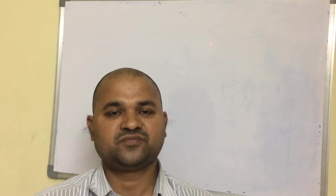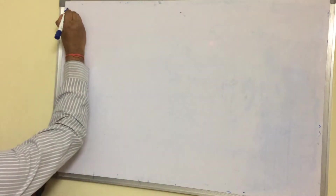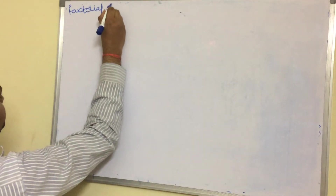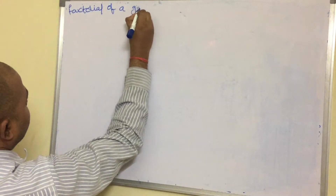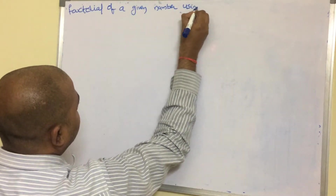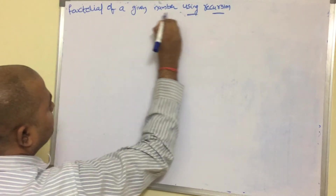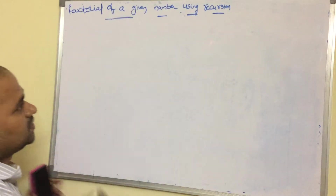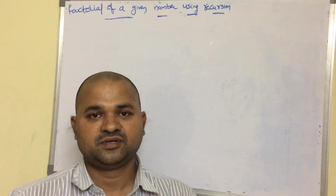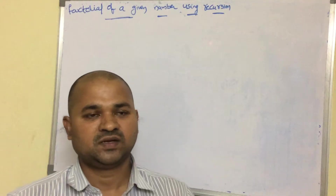In this class, let's see about factorial of a given number using recursion — a C program to find factorial of a given number using recursion. Recursion means a function which is calling itself, that means the calling function and the called function are the same.